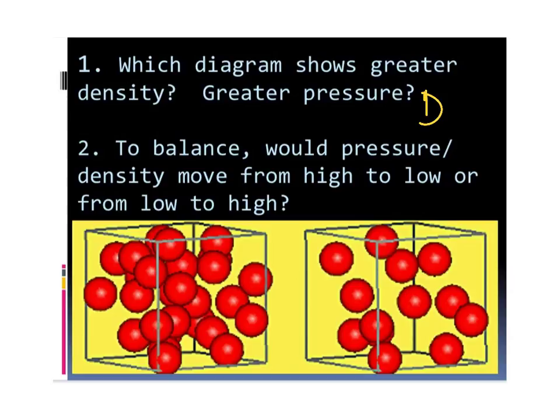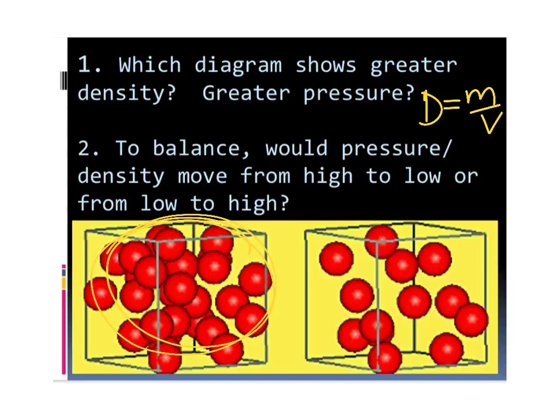Which diagram here do you think has the greater density? Remember, density is mass over volume. The volumes of both boxes are the same, but the mass is different. The one on the left has the much larger mass and the one on the right has the smaller mass. So the diagram with greater density is the one on the left. Remember, density and pressure are best friends. If you have more molecules, you have greater density and greater pressure. So the one with greater pressure and greater density is the one on the left.